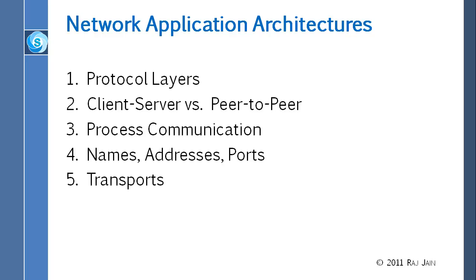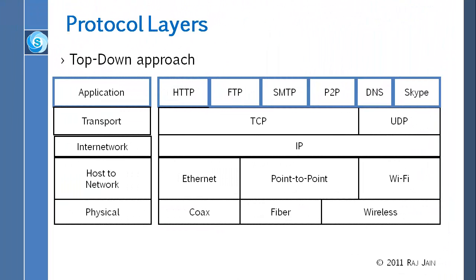We will talk about what are the different protocol layers, what does P2P mean, what is process communication, what are the names, addresses, and ports, and what are the transports. So for protocol architecture, we already know that TCP/IP has a layer stack. We have the physical layer, then what is called the data link layer, also called host to network layer. IP is the internet layer, and then transports are TCP and UDP.